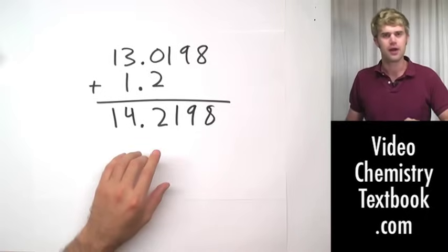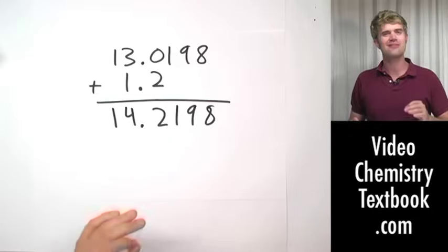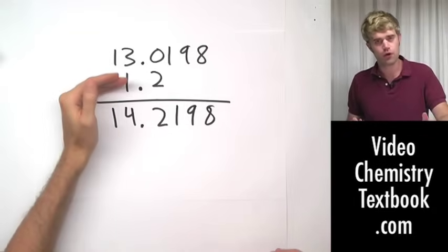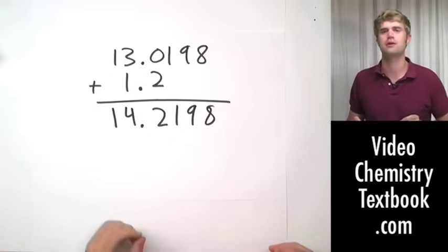So I add these guys up and here's the answer that I get. Now for rounding, my final answer can't have any more decimal places than does the number I started with that has the fewest number of decimal places.